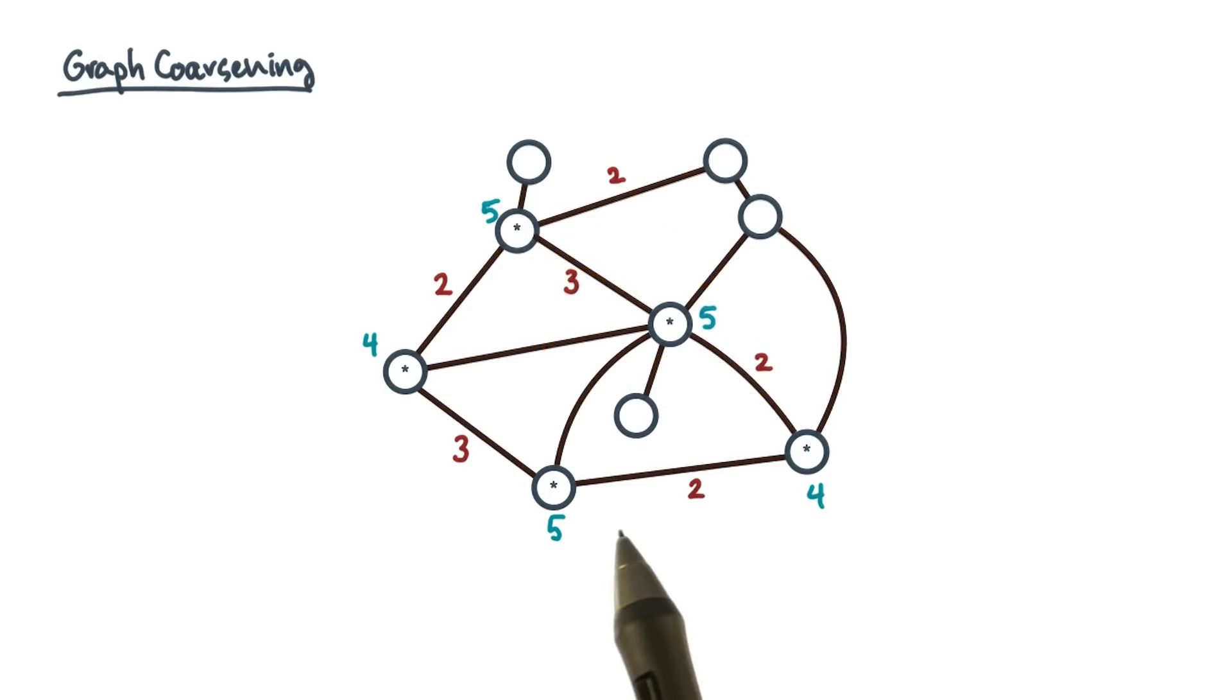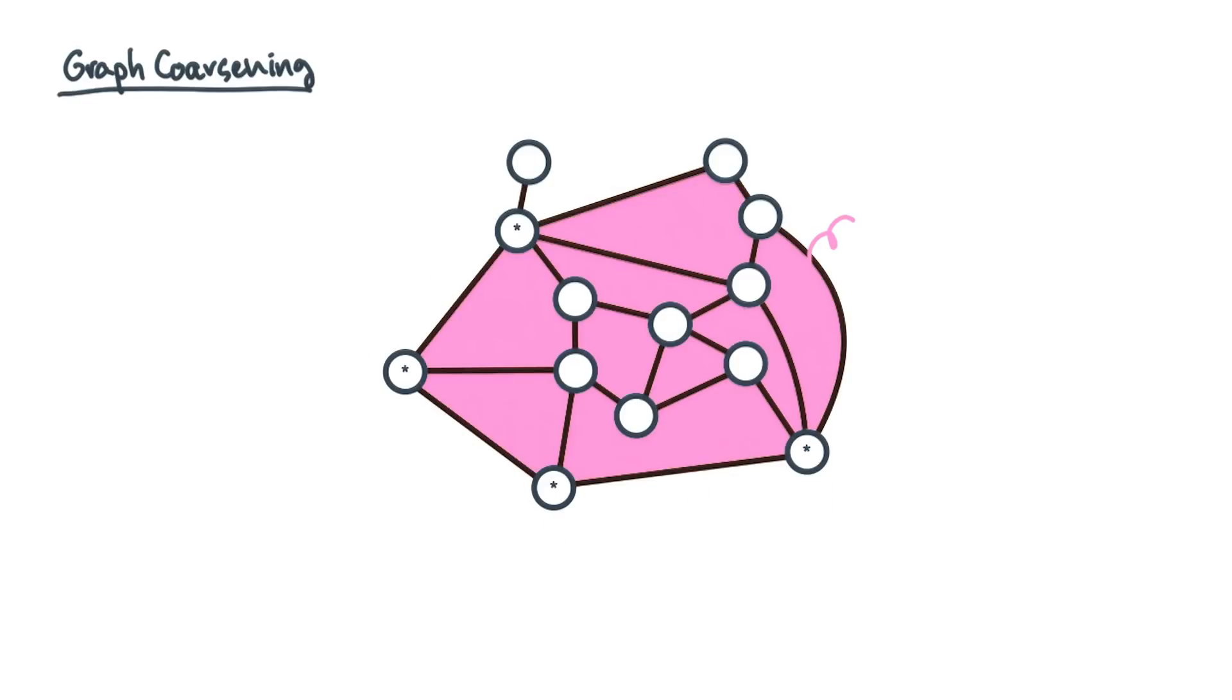So this is the final result. That's the basic process of coarsening a graph. This final result kind of looks like something. Oink!